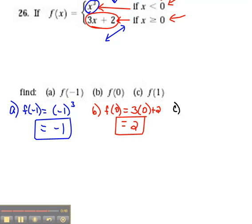Now for the last part, the f of 1. Again, we need to decide which category it falls into. 1 is greater than zero, so we're going to be using our second equation. So 3 times 1 plus 2 would give us a 5. So the f of 1 is 5.